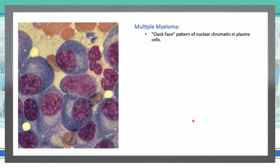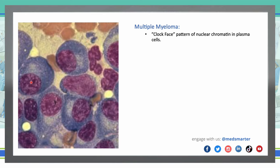In multiple myeloma, the plasma cells are going to show blue cytoplasm, eccentric nucleus, and a perinuclear pale zone or halo. This shows us a clock face pattern of nucleochromatin in plasma cells. The clock face pattern is seen in multiple myeloma.